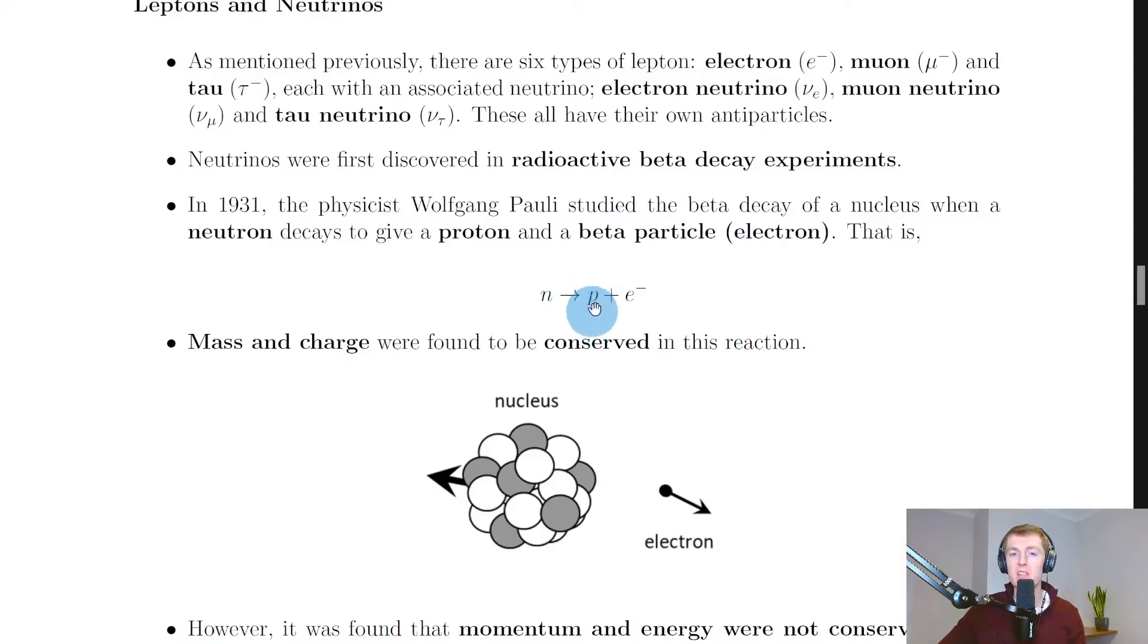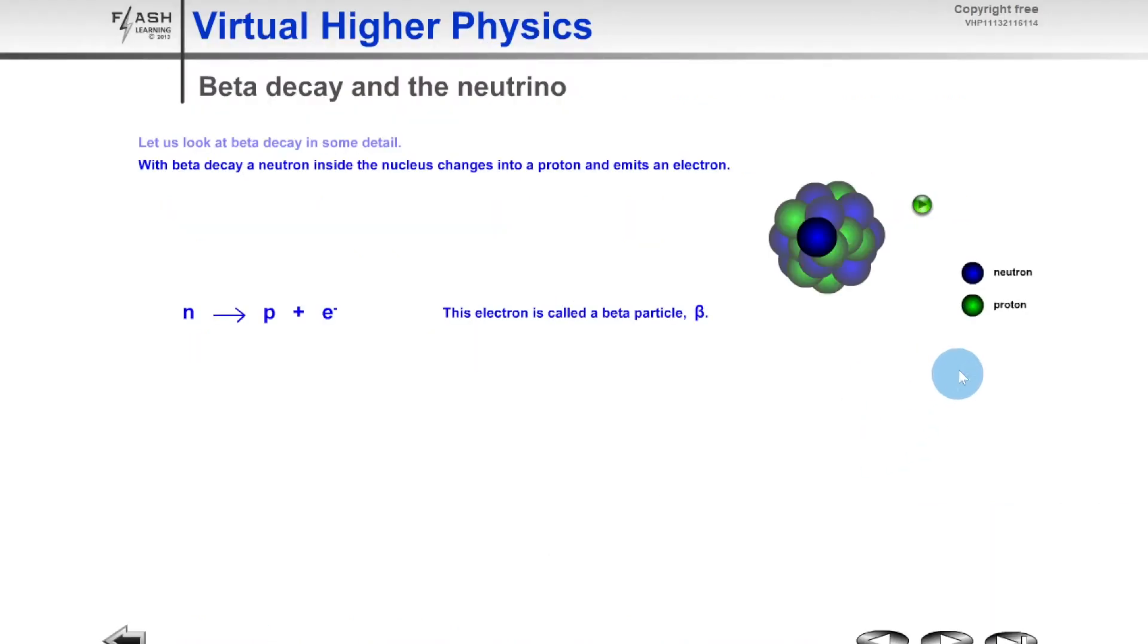That is, we have a neutron (n) converting into a proton (p) plus an electron (e⁻). I'll show you a quick simulation to help visualize this beta decay.